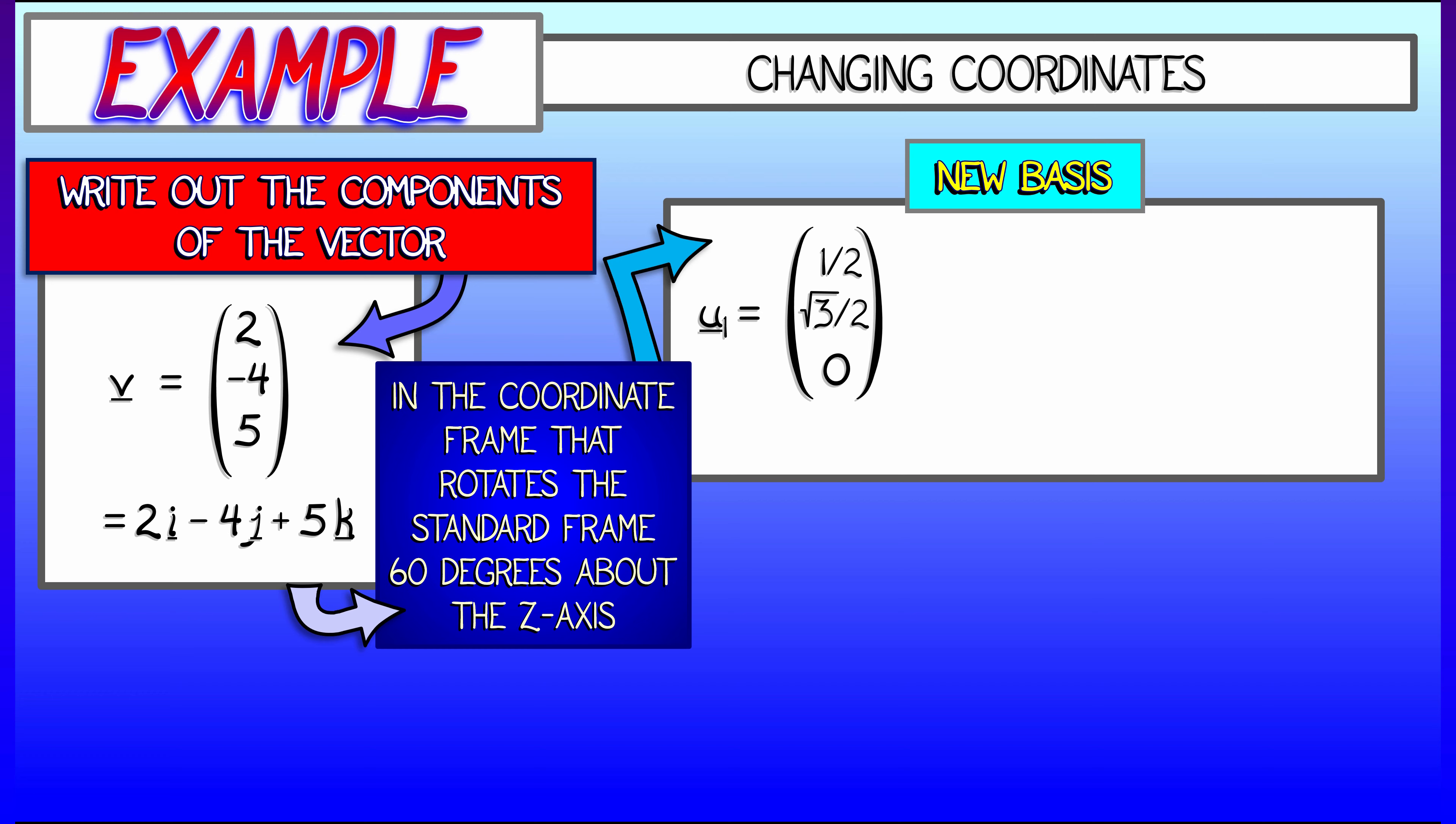u1 is 1 half, root 3 over 2, 0. u2 is minus root 3 over 2, 1 half, 0. I got those by taking the i and j vectors and rotating by 60 degrees using a rotation matrix. The u3 vector is the same as the k vector, 0, 0, 1, because we just rotated about the z-axis. That hasn't really changed anything.